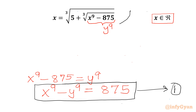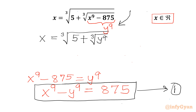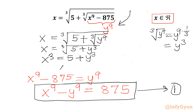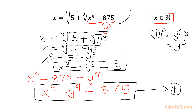Now with this substitution I will reframe the original equation. x equals cube root of 5 plus cube root of y to the power 9. Now cube root of y to the power 9 equals y to the power 9 times 1/3, which gives us y cubed. So I can write x equals cube root of 5 plus y cubed. Cubing both sides gives x cubed equals 5 plus y cubed, or x cubed minus y cubed equals 5. This is equation number 2.